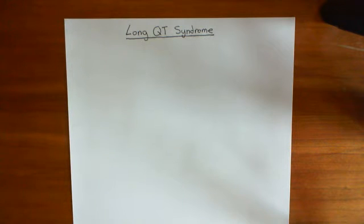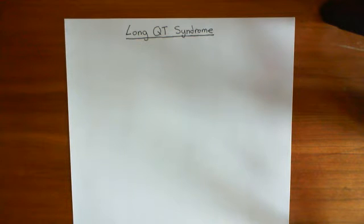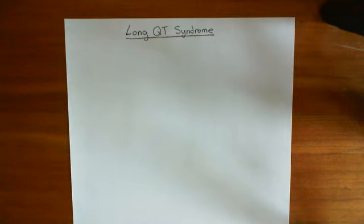Some of these potassium channels — one of them in particular — is bound to an A-kinase anchoring protein, specifically A-kinase anchoring protein 9, which is also known as YOTEO. And basically, if you have a mutation in that A-kinase anchoring protein, then you will get very similar problems to if you have a mutation in the potassium channel itself.